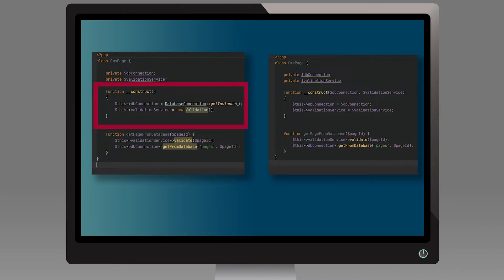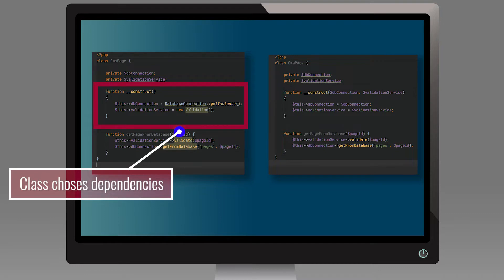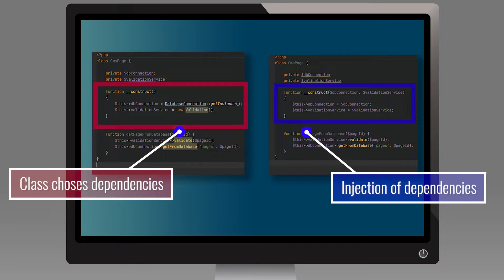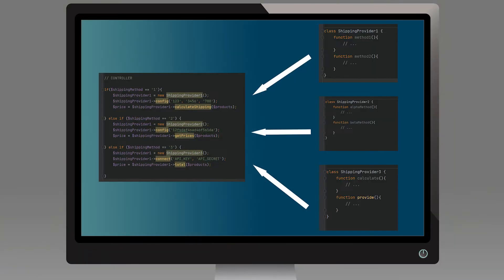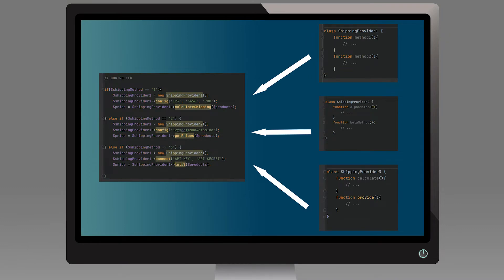So instead of our objects making new objects inside themselves and thus creating necessary dependency, we can use a dependency injection pattern, which allows for injecting dependencies that our class will then use. Or say our application has two shipping services and we need to add a third one. If we just add another if-else, we are going to end up with a big mess very soon. This is where we could use the adapter pattern to adapt some new service to our existing code base.